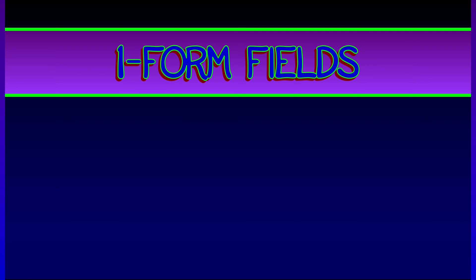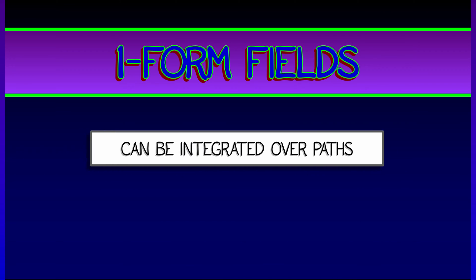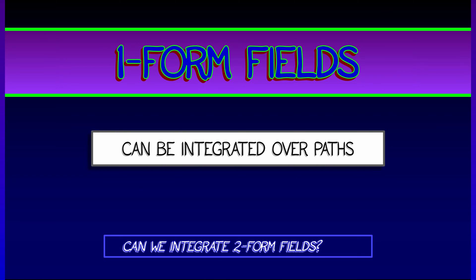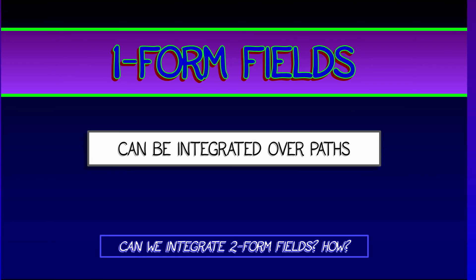We have seen how to integrate one-form fields over paths, over one-dimensional regions. Our next question is, can we integrate two-form fields, how and over what?